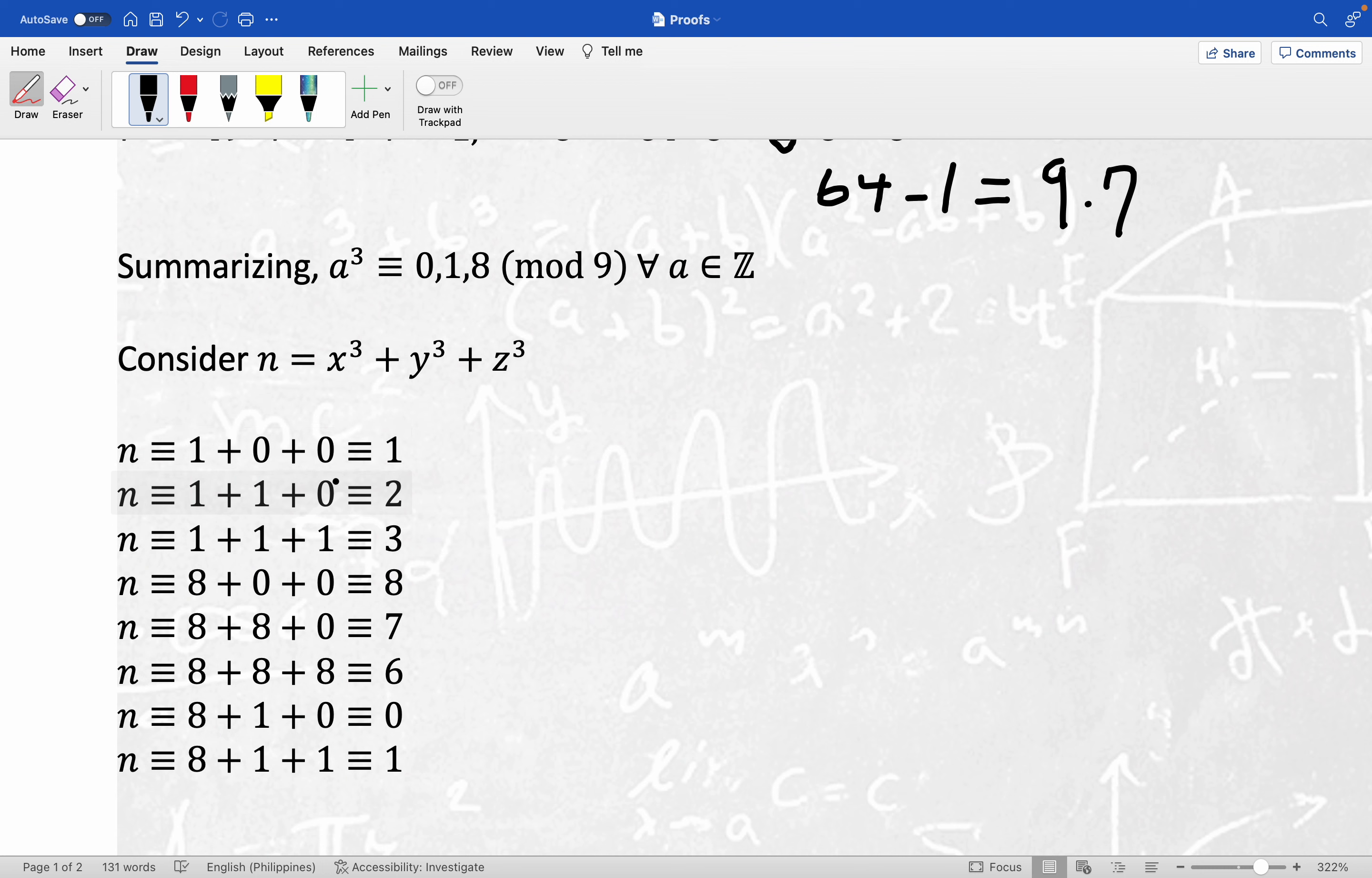Okay, and you see, guys, I'm just going through every single possibility here, every single possibility of eight, one, and zero. Okay, and so notice we get one, two, three, but four is missing.